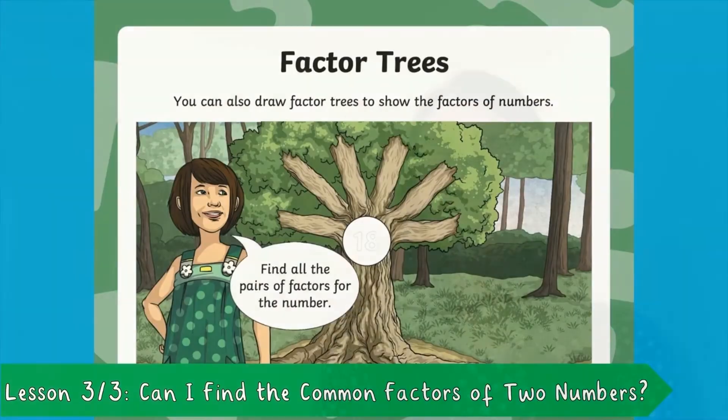And in the final lesson, Darshana finishes off this series by teaching your children how to find common factors of two numbers. 18 has the factor pairs 1 times 18, 2 times 9 and 3 times 6.